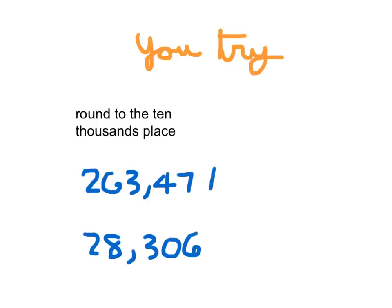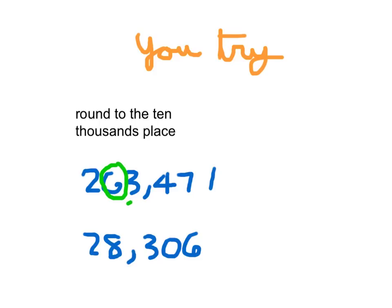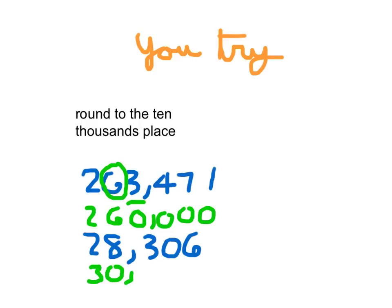It's time for you to try. Go ahead and take both of these problems and round them to the 10,000th place. Go ahead and hit pause. For that first problem, did you circle the 6 and underline the 3? Because that 3 is a 0–4, the circled digit stays the same. We flex our muscles and digits to the right change to 0; all other digits stay the same. 28,306 rounded to the nearest 10,000th place is going to be 30,000.